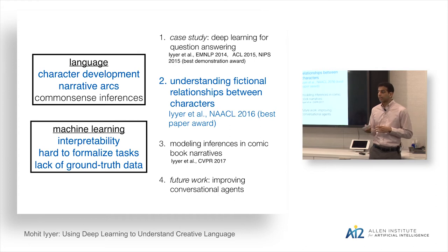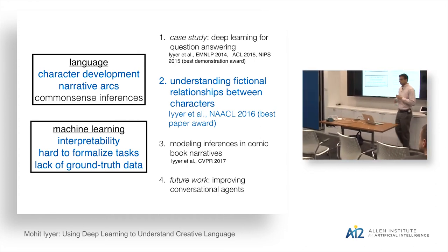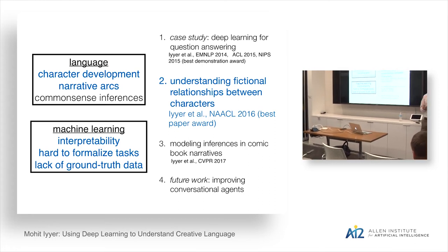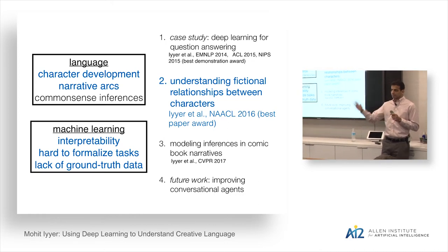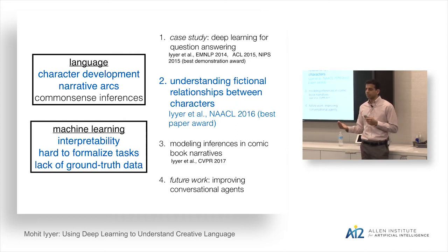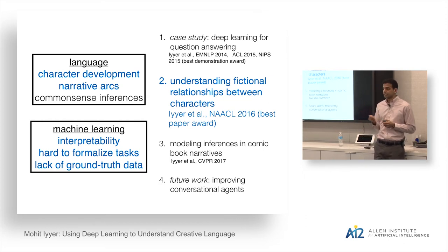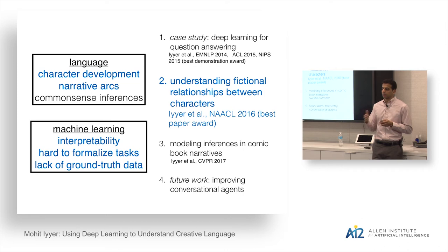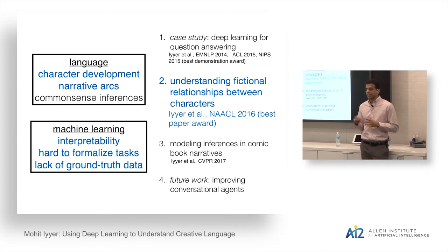In response to a question about timing: in our human evaluations, whoever buzzes first gets a chance to guess, and if correct their team gets all points. On literature questions, the network wasn't unable to answer by the end — it just couldn't answer after seeing only one or two clues, whereas the humans could, presumably because they had read the books beforehand and had much more prior knowledge.